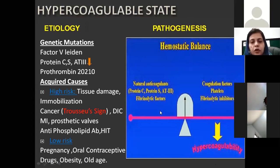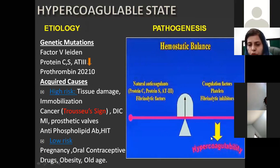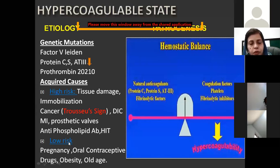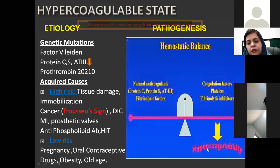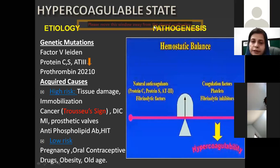How do all these factors cause thrombus formation? We have two sides of the balance. We have clotting factors, platelets, and fibrinolytic inhibitors which promote thrombosis. Whenever these factors are increased due to any of these reasons, or when naturally occurring anticoagulants and fibrinolytic factors are reduced due to any of these conditions, there is more diversion towards a hypercoagulable state.